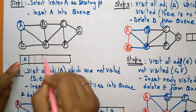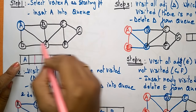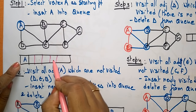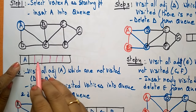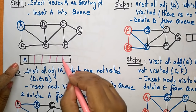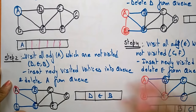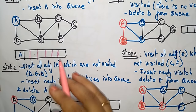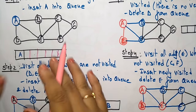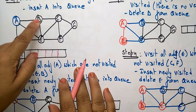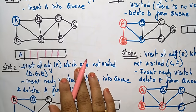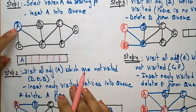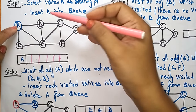The queue size equals the number of vertices: 1, 2, 3, 4, 5, 6, 7 — total size of 7. Now visit all adjacent vertices of A which are not visited. In DFS you take just one adjacent vertex, but in BFS you select all adjacent vertices of A. The adjacent vertices of A are D, E, and B.